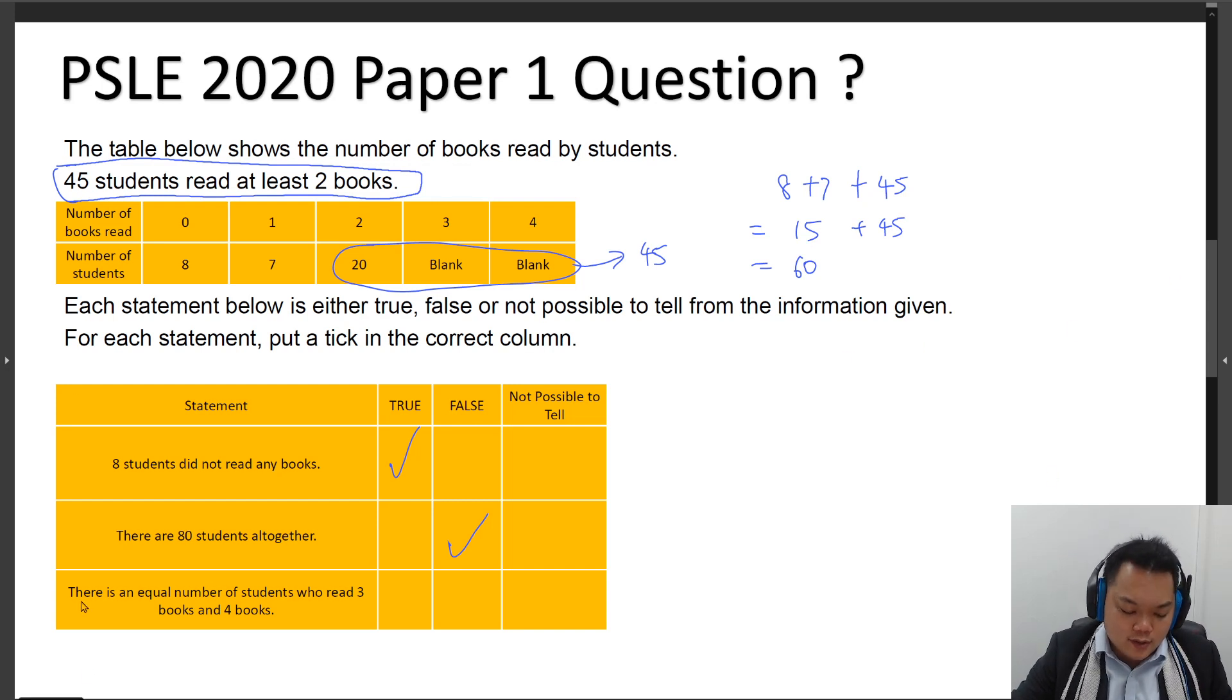Then the last one says that there is an equal number of students who read 3 books and 4 books. So to deal with this, you have to look at this situation carefully.